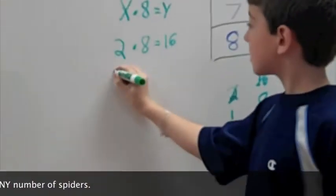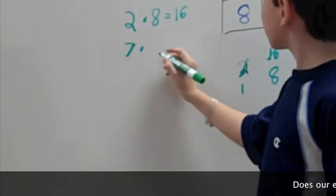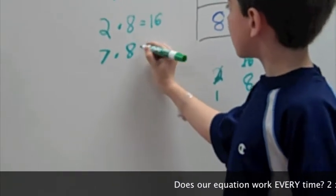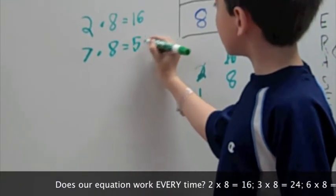Now, let's go to the seven. Seven times eight equals fifty-six.